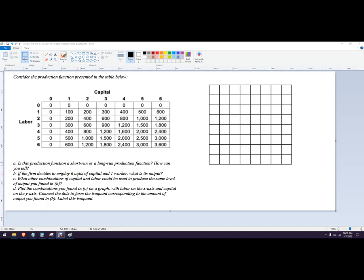If the firm decides to employ six units of capital and one worker, what is that output? We're going to go to six units of capital on the table and one worker. That output is 600. Let's circle that in red, so it's right here - 600.